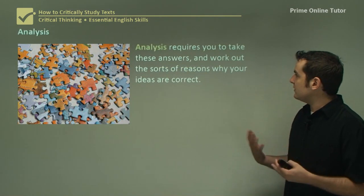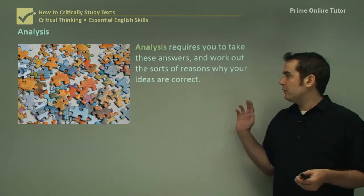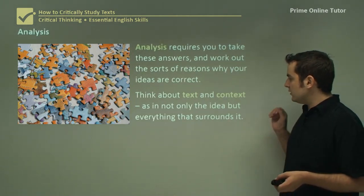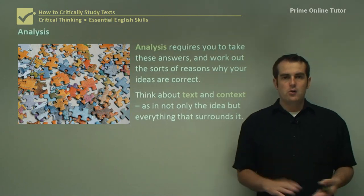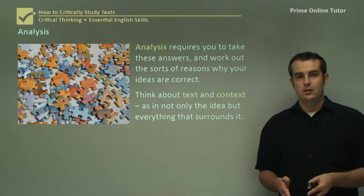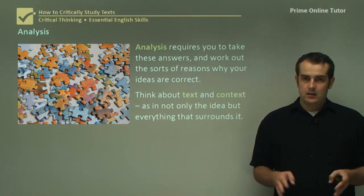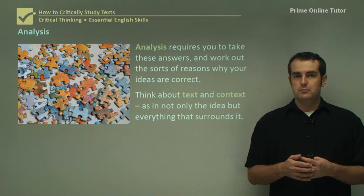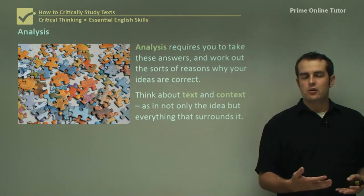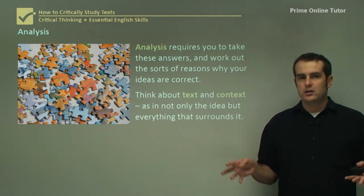Analysis requires you to take these answers and work out why you think they're correct — not quite the proving process yet, but working out why these ideas are correct. First, think about your text and its context — not only the idea but everything that surrounds it. If you see a red light in one section, work out what it means in relation to that scene, what it means in relation to the entire text, and what it means in terms of what the author might have been trying to do.